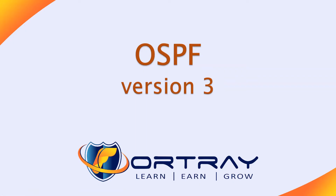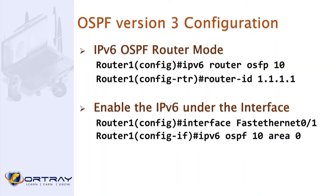In our lab we will be configuring OSPFv3. To enable it, use 'ipv6 router ospf 10' and set the router ID. At the interface level, you need to enable it with 'ipv6 ospf 10 area 0'.